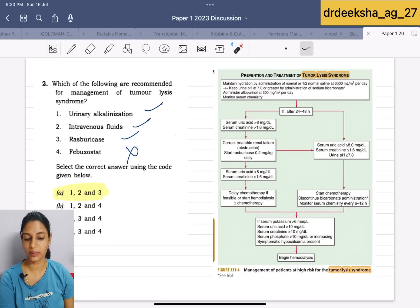The next question, they were talking about the management of tumor lysis syndrome. This is a chart from Harrison. They are saying that you have to maintain the hydration by administration of normal saline and you have to keep the urine pH as 7 or greater by sodium bicarbonate. In short, they are saying urinary alkalinization. Then you have to administer allopurinol and then monitor the serum chemistry.